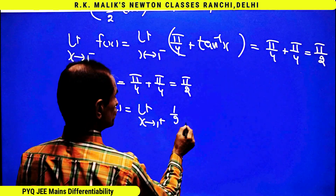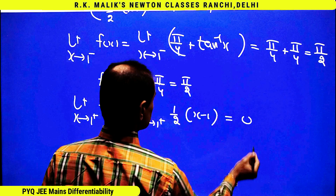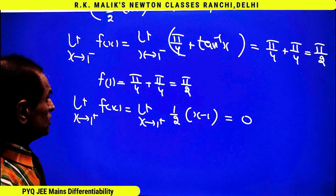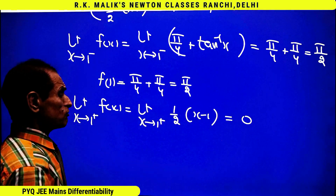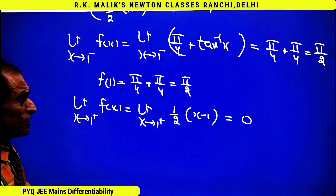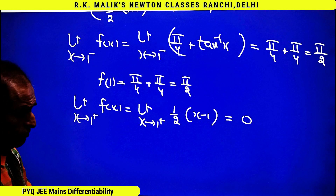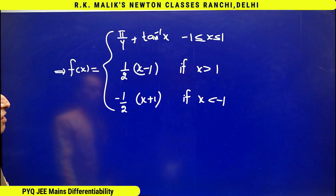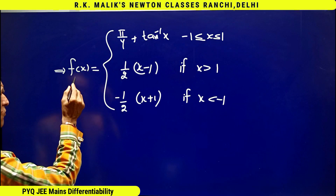For the right hand limit at x = 1, I use the definition (1/2)(x - 1), which gives the answer 0. Hence the left hand limit and the value of the function are both π/2, but the right hand limit is 0. Therefore I can say the function is discontinuous at x = 1, and because of this discontinuity at x = 1, the function is also non-differentiable at x = 1.